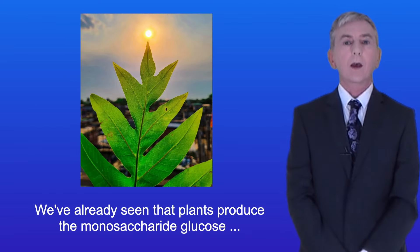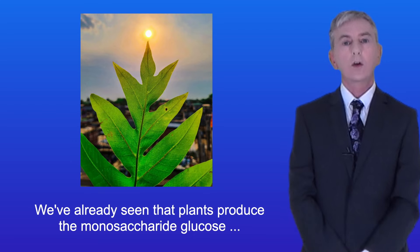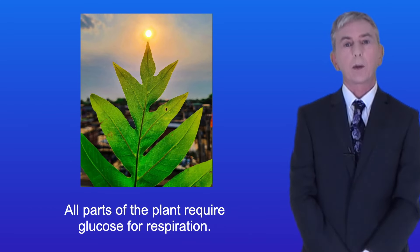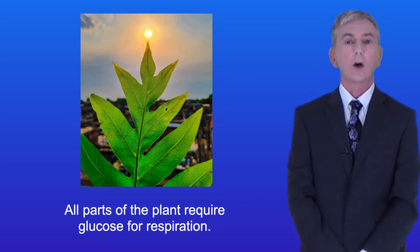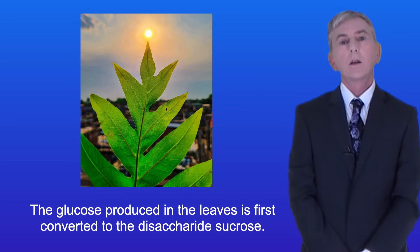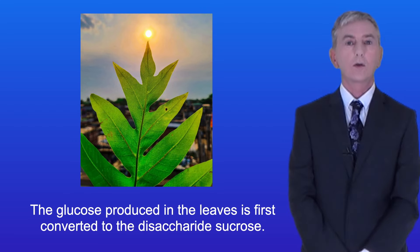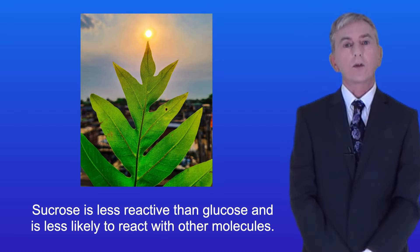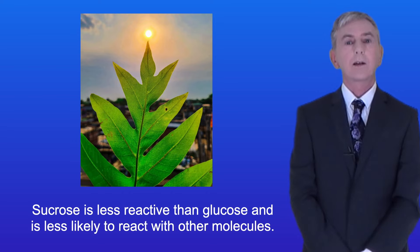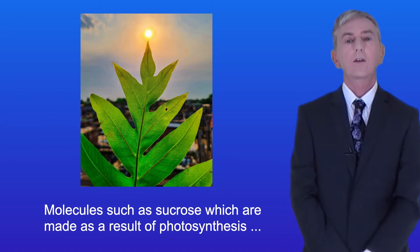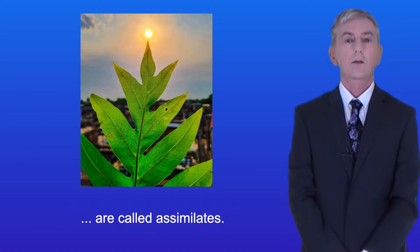We've already seen that plants produce the monosaccharide glucose during photosynthesis in the leaves. All parts of the plant require glucose for respiration. The glucose produced in the leaves is first converted to the disaccharide sucrose. Sucrose is less reactive than glucose and is less likely to react with other molecules.